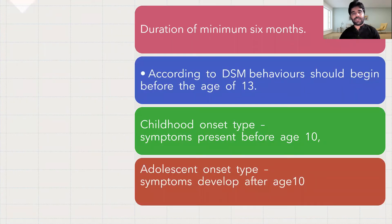If we see the diagnostic criteria according to the ICD-10, the symptom must be present for at least six months. The age of onset is not mentioned in ICD-10, and presence of one symptom is enough for the diagnosis of Conduct Disorder if it is present for six months.